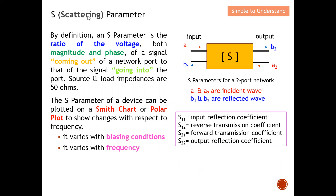In the Part 1 series I defined scattering or S-parameters, but here in Part 2 I want to further illustrate the definition with a little more detail so you can fully understand how we use S-parameters to describe a network. By definition, S-parameters is the ratio — both magnitude and phase — of a signal coming out, which is the reflected wave of a network port, to that of the signal going into the port, which is the incident wave. The source and load impedance are 50 ohms.